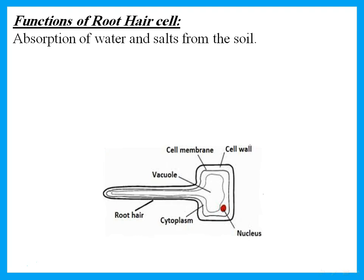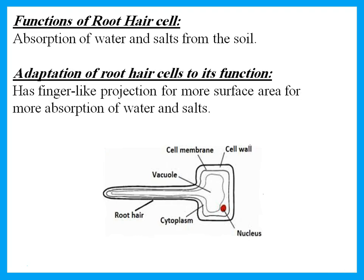The root hair cells — the function of the root hair cell is absorption of water and salts from the soil. How are they adapted to this function? Root hair cells have finger-like projections or extensions for more surface area, for more absorption of water and salts. In addition to the normal parts of a plant cell — cell wall, cell membrane, nucleus, cytoplasm, and large vacuole — it also has a finger-like projection, which gives it more surface area to absorb more water and salt.